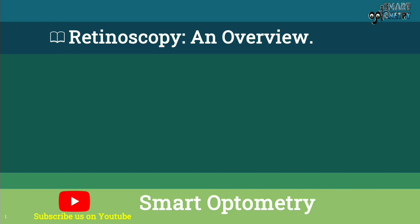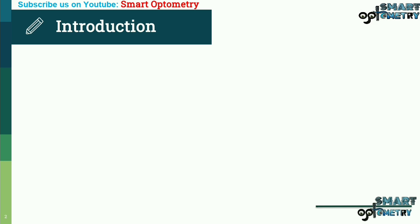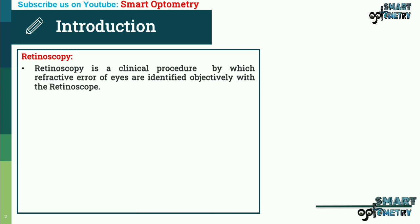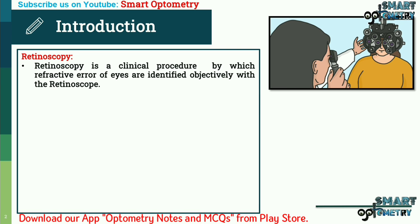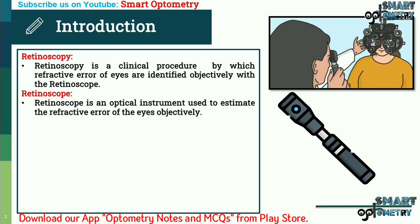Today I will discuss retinoscopy and an overview, covering the following topics. Retinoscopy is a clinical procedure by which refractive error of eyes is identified objectively with a retinoscope. A retinoscope is an optical instrument used to estimate the refractive error of the eyes objectively — objectively because the patient doesn't need to do anything.